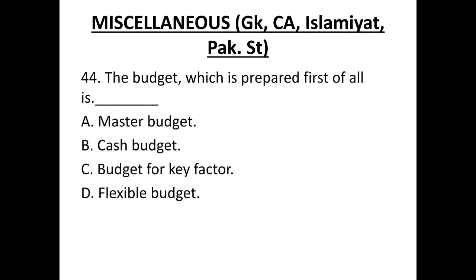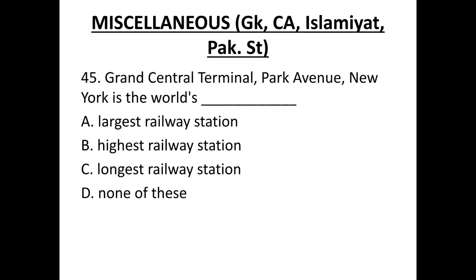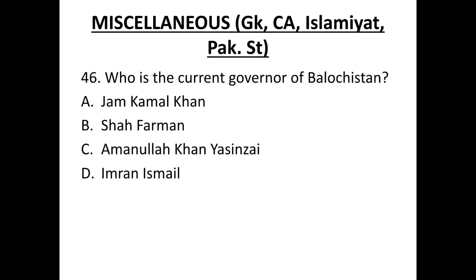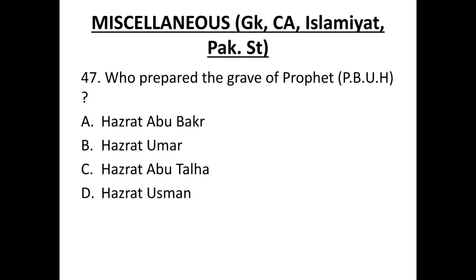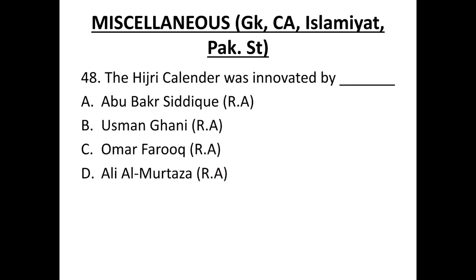Question 44. The budget which is prepared first of all is called budget for key factor. Grand Central Terminal, Park Avenue, New York, is the world's largest railway station. Question 46. Who is the current governor of Balochistan? It's Amanullah Khan Yasin Zayi. Option C. Question 47. Who prepared the grave of Prophet peace be upon him? The correct option is Hazrat Abu Talha, which is option C.